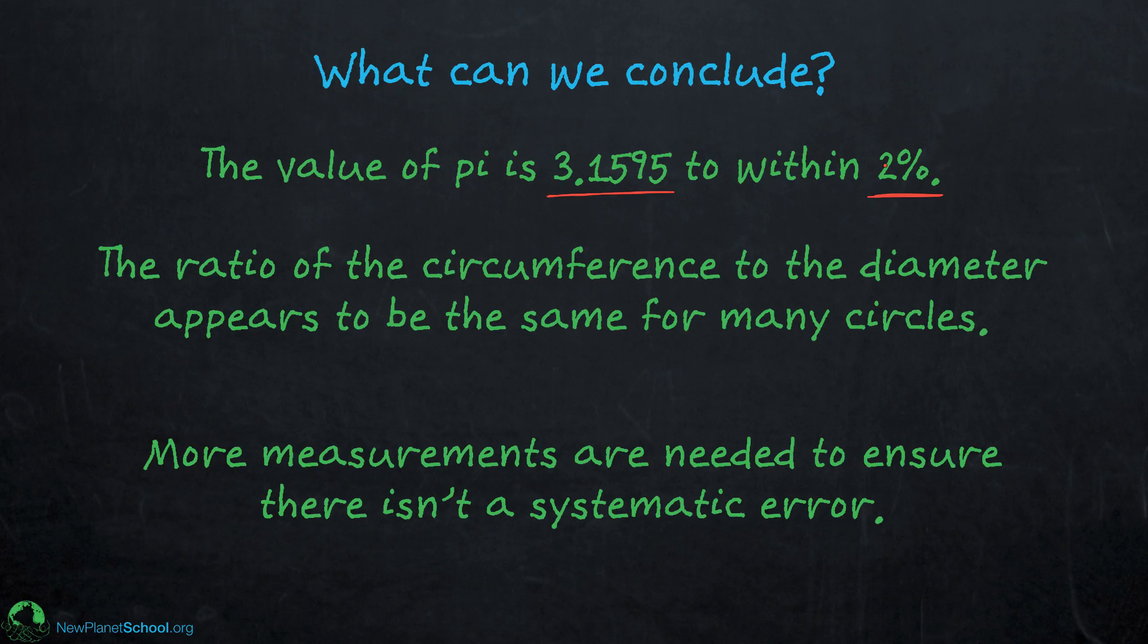One idea, for example, is that tape measures can only measure distances down to a certain level, like a millimeter or 32nd of an inch. If we had measured diameters and circumferences of much larger objects, maybe it would have been actually even more accurate, and we didn't test that. So that's something to think about.